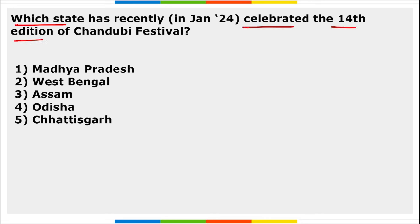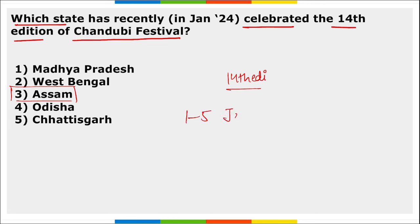The 14th edition of the Chandubi Festival was celebrated by Assam. It was held from 1st to 5th of January. The festival celebrates the cultural heritage of Assam's tribal communities such as Rabhas, Garos, Gorkhas, etc., that live near the Chandubi Lake.